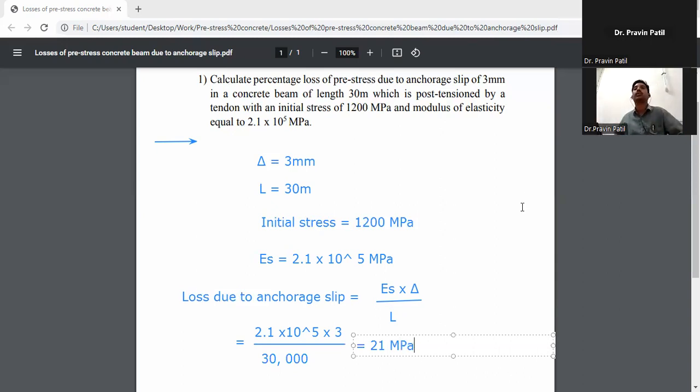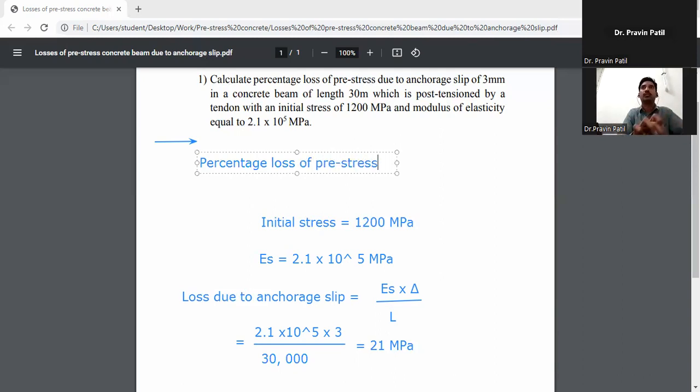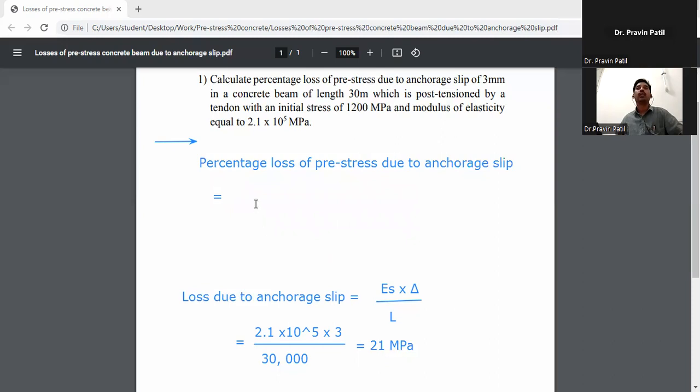Initial stress is given. Percentage loss of prestress due to anchorage slip is equal to 21, that is loss due to anchorage slip, divided by initial stress.